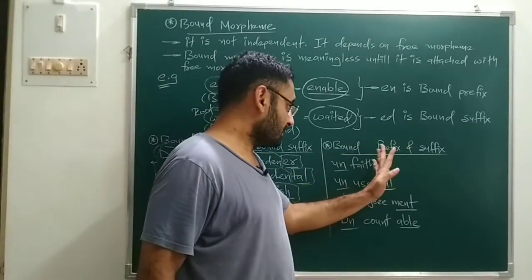Now, bound morphemes can be classified further. In 'enable', 'en' is placed before the root word — so 'en' is known as a bound prefix. A prefix is the word you place before the root word.